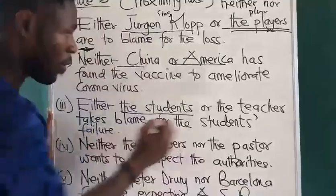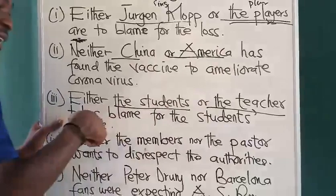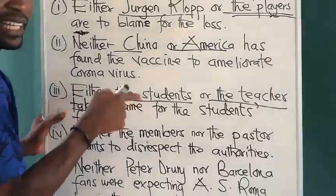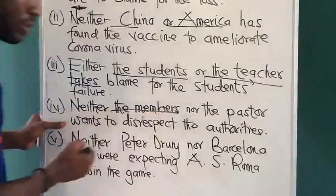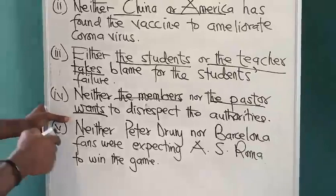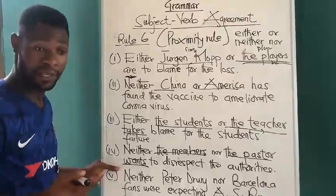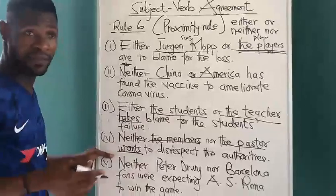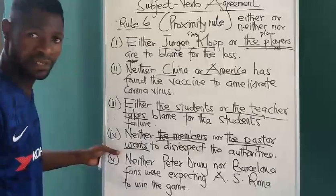'Either the students or the teacher' — students and teacher, which of them is closer to the verb? Teacher. And it is singular, therefore it takes a verb with S — singular. If we have the teacher coming first and the students second, then 'either the teacher or the students' — plural verb. 'Neither the members nor the pastor' — members is plural, pastor is singular, but pastor is closer to the verb. So a verb with S: 'neither the members nor the pastor wants to disrespect the authorities.'